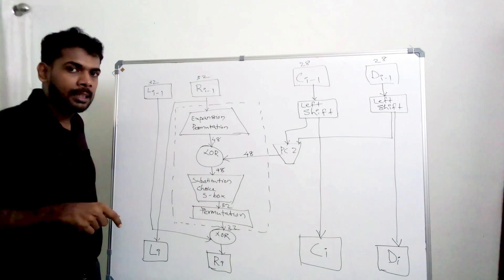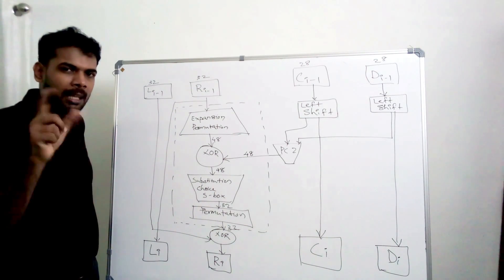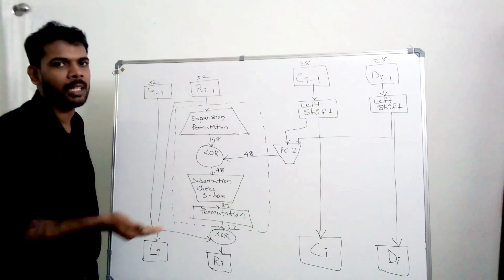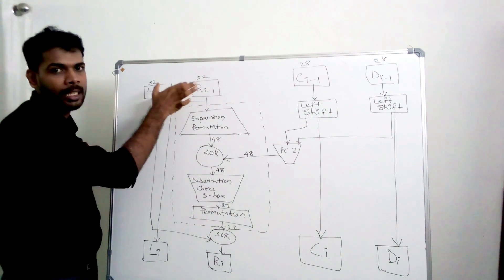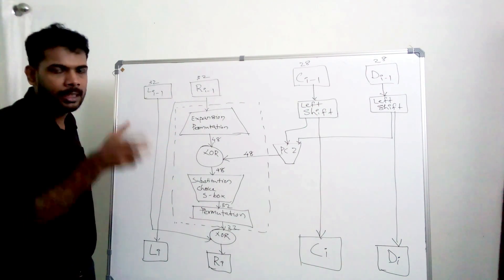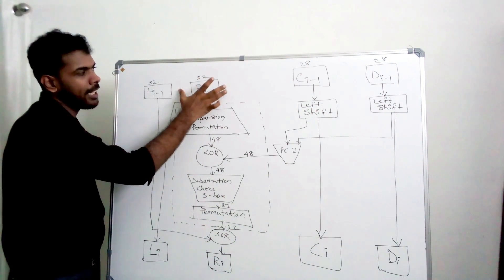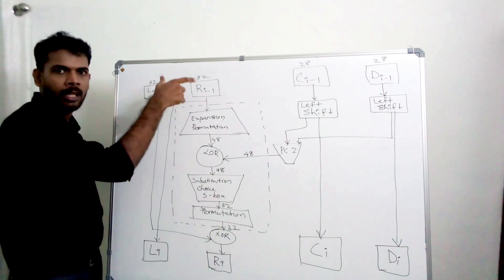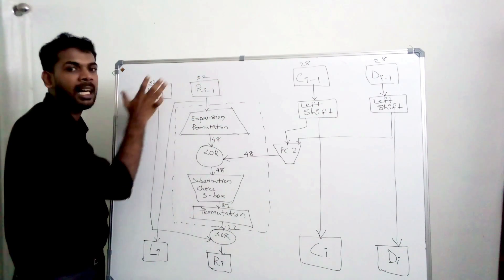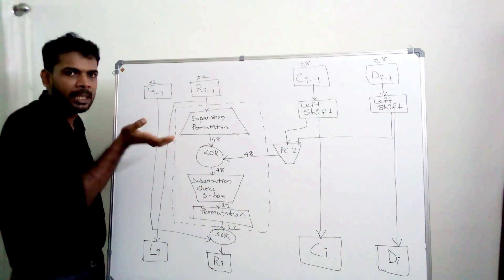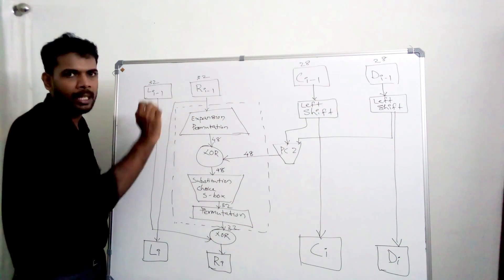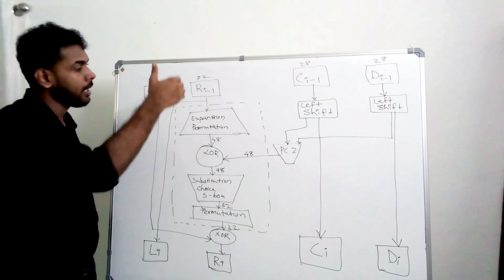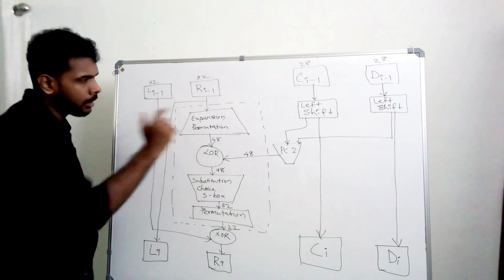In each round, we use the notation Li and Ri. For round 1, the input is the previous output (i minus 1). In round 1, we see the left half — that is, the left 32 bits — and the right 32 bits. For round 2, i minus 1 equals 1, meaning it uses the output of round 1 as input. The right half of the previous round becomes the right 32 bits.